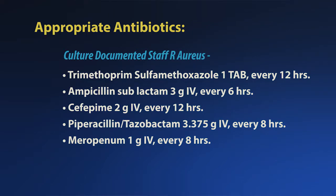If there is an inadequate response to initial therapy within 72 hours, then ampicillin-sulbactam 3 grams IV every six hours should be administered. If there is inadequate initial response and the patient has risk factors for pseudomonas, then cefepime 2 grams IV every 12 hours, piperacillin-tazobactam 3.375 grams IV every eight hours, or meropenem 1 gram IV every eight hours should be administered.